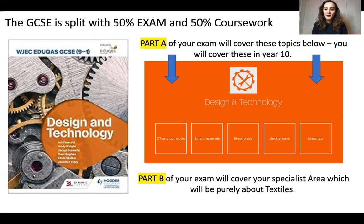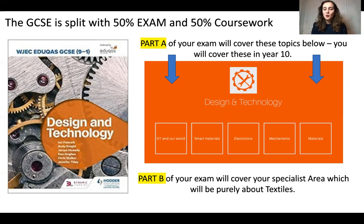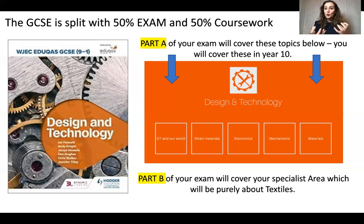Don't worry, because in Part B of your exam — when you flip over the paper at the end of Year 11 — you'll find the textile section and you'll be answering more in-depth questions just about your specialism, which is textiles, which you'll learn with me. So you'll learn the core DT theory for the five topics, and then predominantly focus on textiles knowledge, theory, and skills for your coursework.